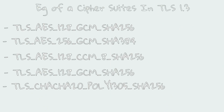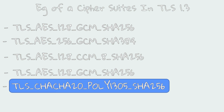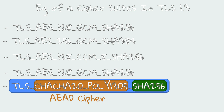Back to our cipher suites. This cipher suite will use ChaCha20-Poly1305 as an AEAD cipher, and SHA-256 will be used as a hash function for the key derivation function. Remember, the key derivation function is used in the handshake to derive multiple keys.